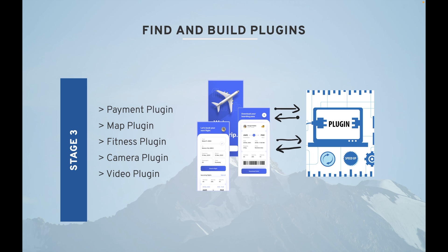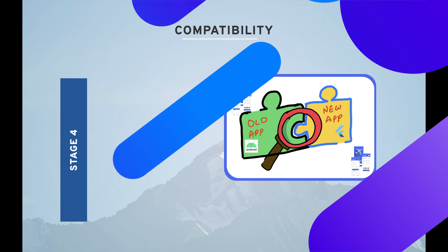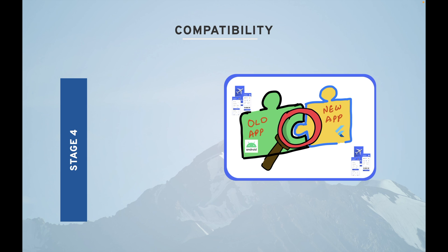Stage four is compatibility — very critical. You have to make sure that your older app is compatible with your newer app. For example, your older app in Android and your newer app in Flutter should look very similar. If users find the migrated app very different from the older one, they might not use it. If you've changed the user experience drastically, users are definitely not going to love that.